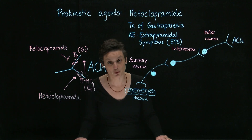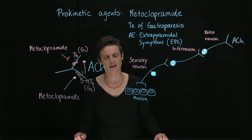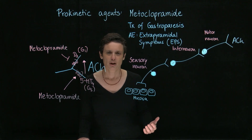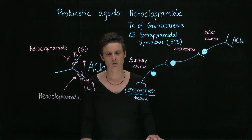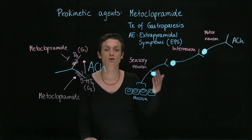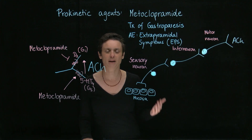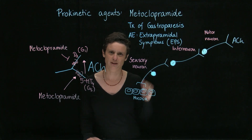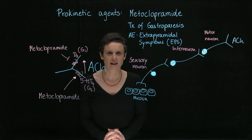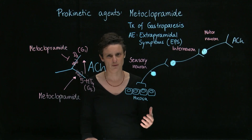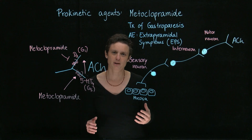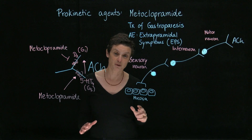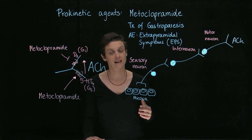Now, the adverse effects of metoclopramide. Metoclopramide is a dopamine blocker and it also passes the blood-brain barrier. The most worrisome adverse effects are so-called movement problems facilitated by dopamine antagonism, sometimes referred to as extrapyramidal symptoms, or EPS. Extrapyramidal symptoms are all kinds of motor problems. We know of a specific disease where patients lose dopaminergic neurons — and that's Parkinson's disease.